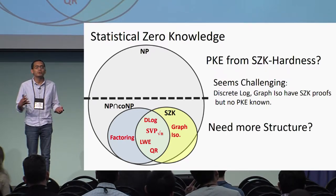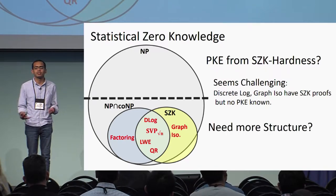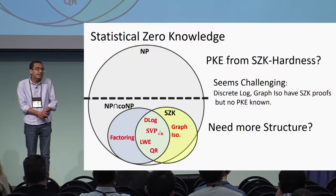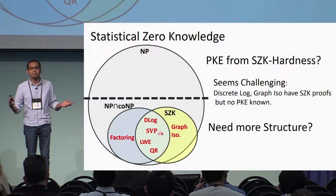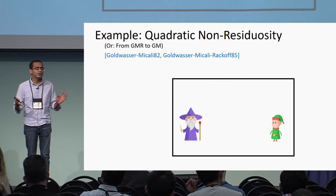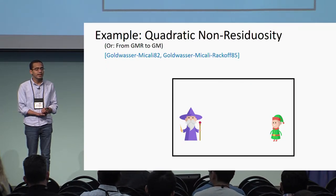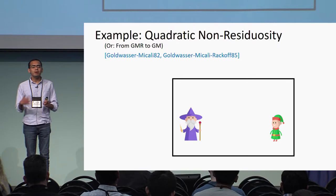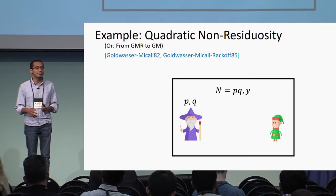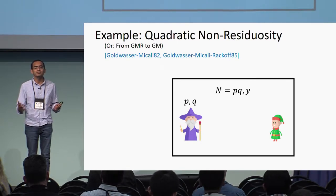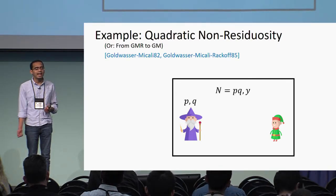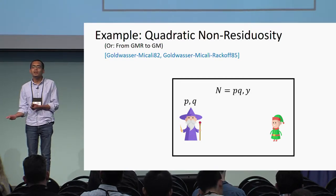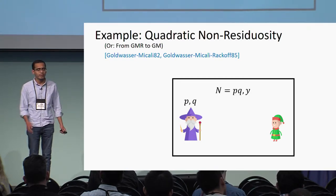So can we impose more structure to actually get something? To that end, let's look at an example: quadratic non-residuosity. In this problem, the instance consists of a number n which is a product of two primes, and a number y, and we have to answer: is it a square or not, modulo n?